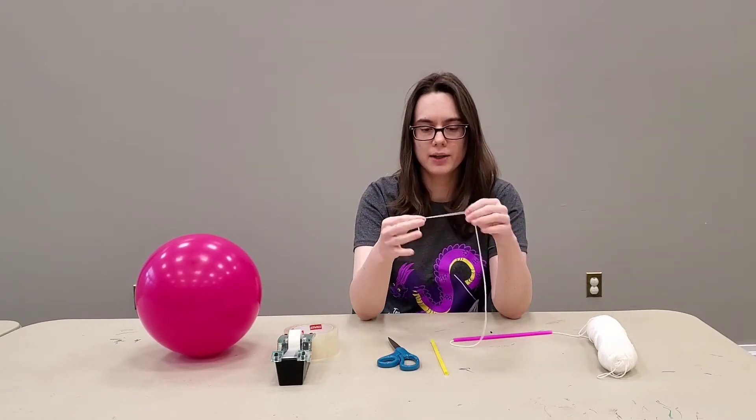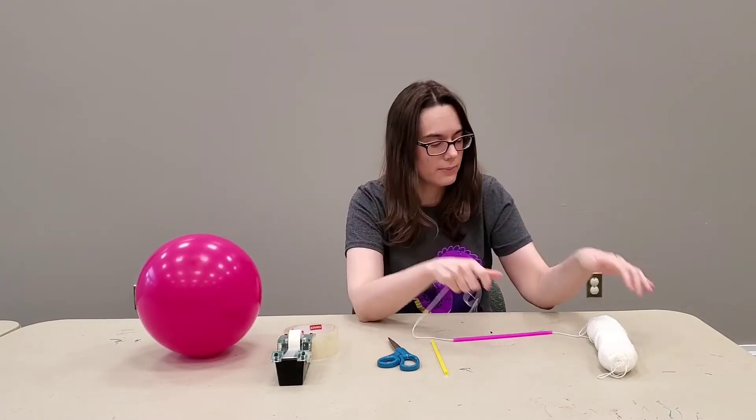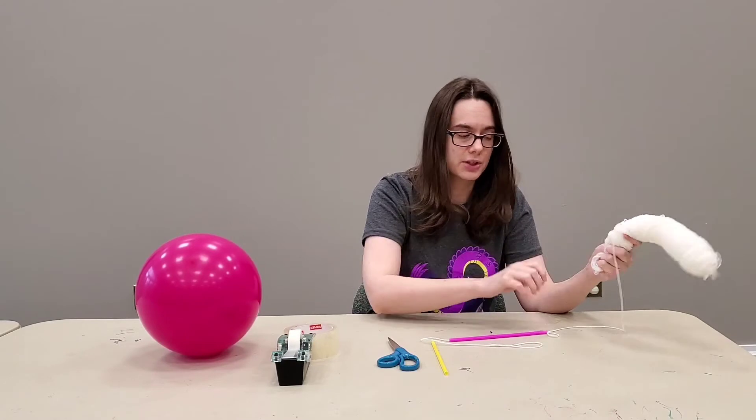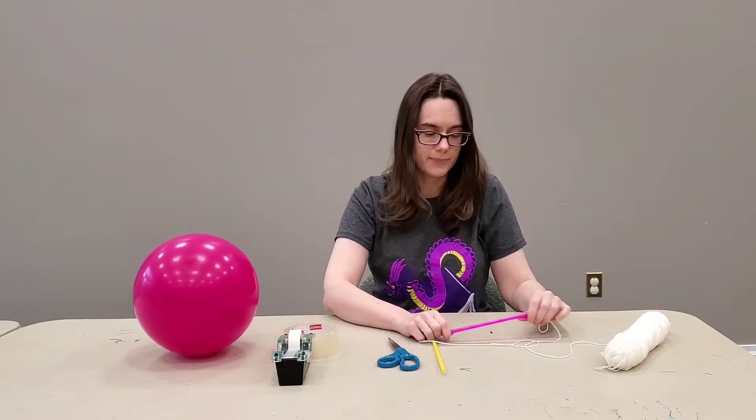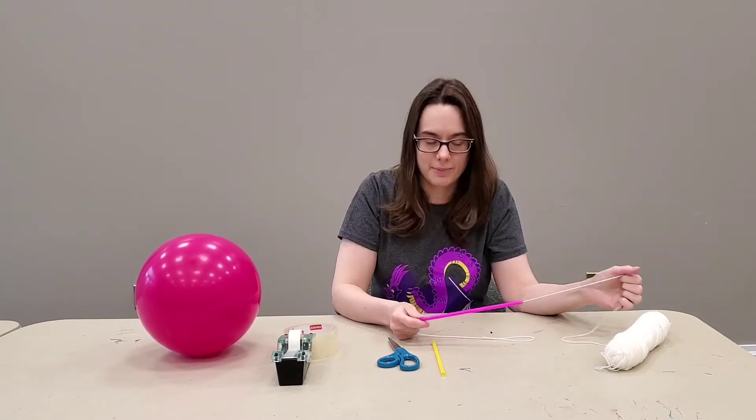Then you're going to tie one end of the string to one side of the room and the other end of the string to the other side of the room. Then you're going to tape your balloon to the straw and then let the air out and see what happens.